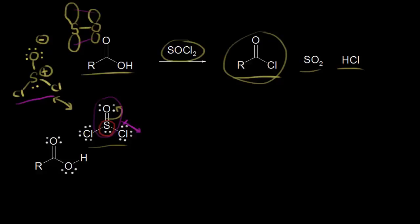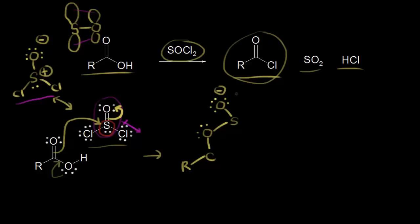Our carboxylic acid is able to act as a nucleophile. These electrons can attack our sulfur — the nucleophile attacks our electrophile — and then these electrons kick off onto the oxygen. Our R group is bonded to the carbon, which is bonded to an oxygen with two lone pairs. The oxygen forms a bond with the sulfur, which now has a negative one formal charge on this oxygen. The sulfur is bonded to two chlorines with all their lone pairs, and there's a double bond between the carbon and this oxygen giving it a plus one formal charge.